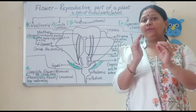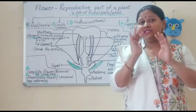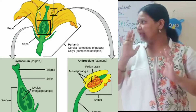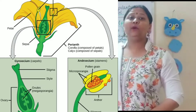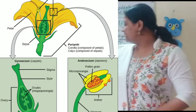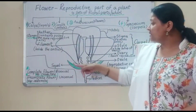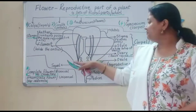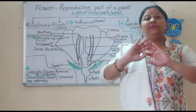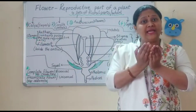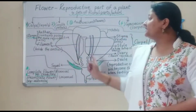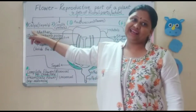It is a very simple topic, but just try to understand it slowly so that all your concepts will be clear. When we are talking about calyx — this is the first whorl, that is calyx. Calyx is actually many sepals combined to form this whorl. All the sepals combined are called calyx.